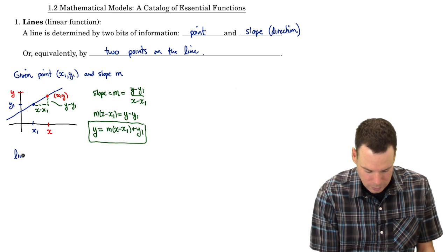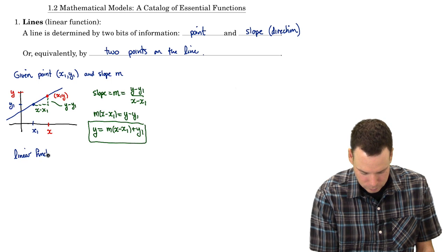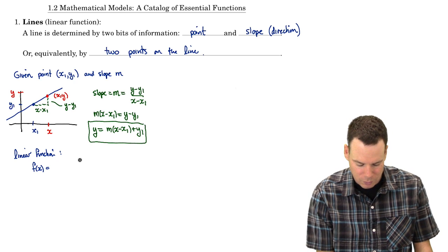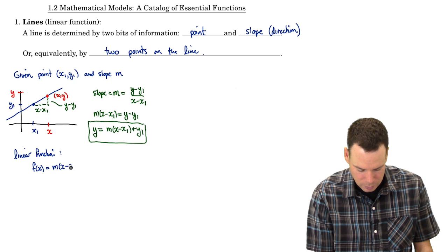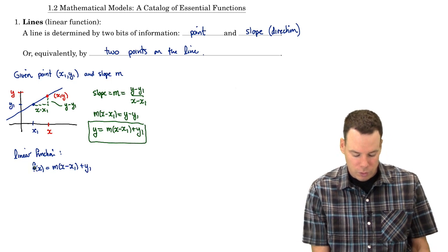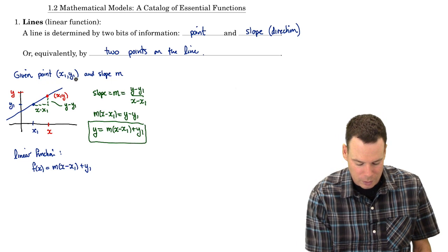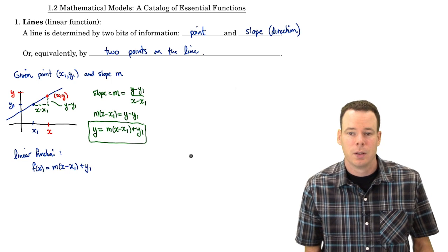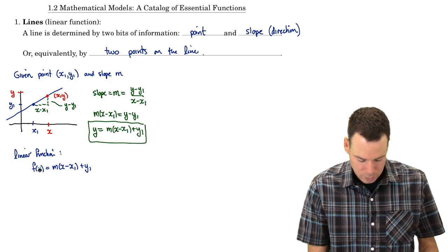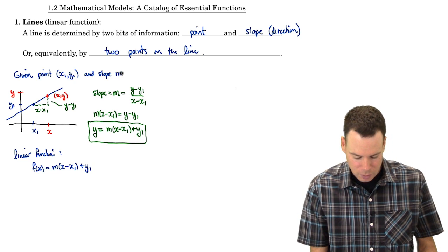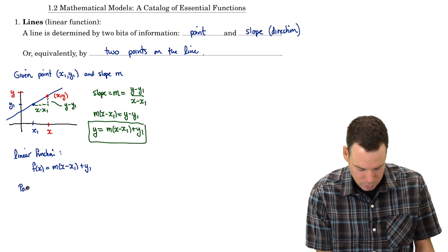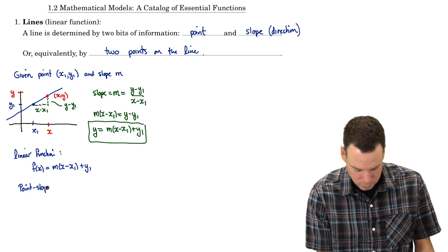Solving for y, we get y = m(x − x₁) + y₁. So the linear function f(x) = m(x − x₁) + y₁. We have all the information we need: if we're given the point (x₁, y₁) and the slope m, the only unknown is x — our variable. This is known as the point-slope form of the line, because all it takes to determine it is a point on the line and a slope.